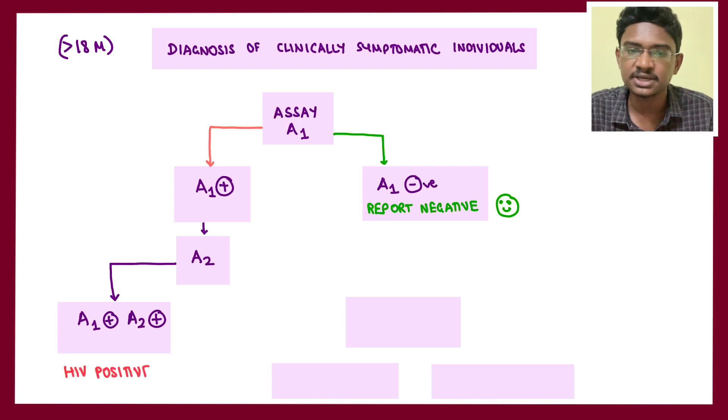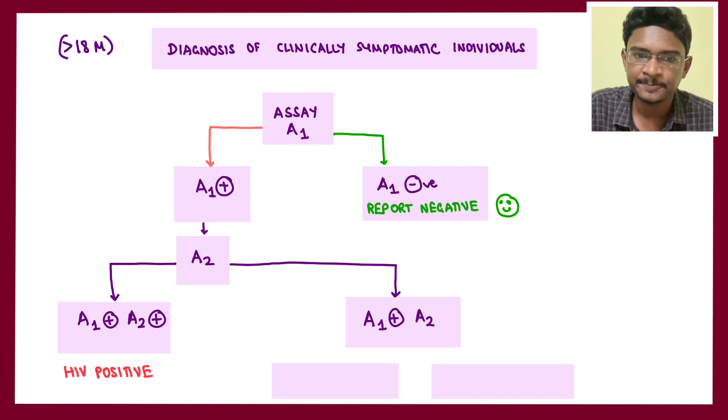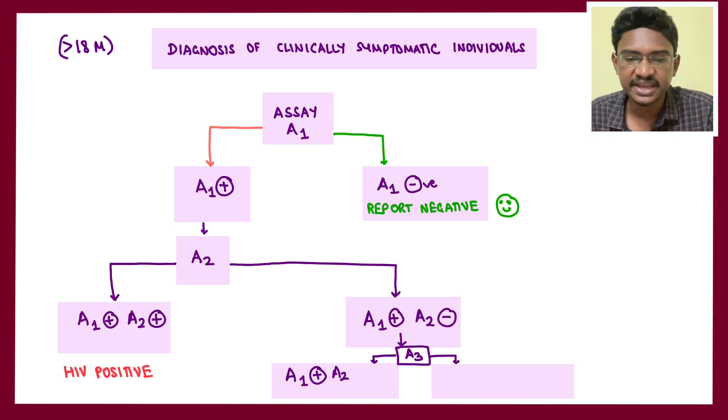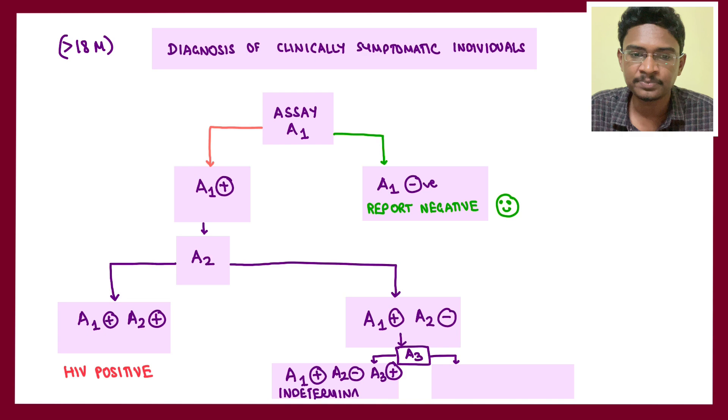If second assay is negative, you should go for the third assay. If third assay is also negative, two out of three is negative, report it as negative. If third test becomes positive, the result is called interim indeterminate where you should repeat the blood test after 14 to 28 days.